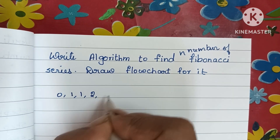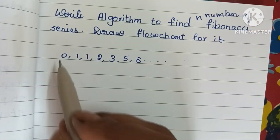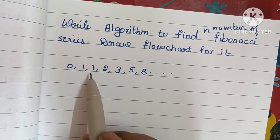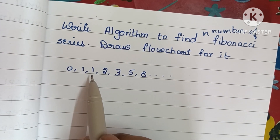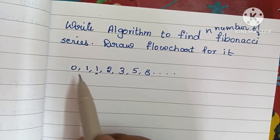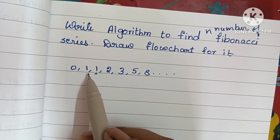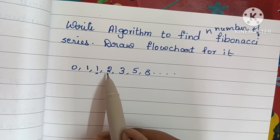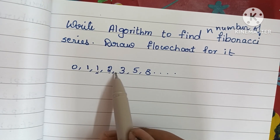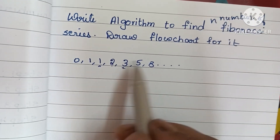Here zero and one are the first two numbers of the Fibonacci series. The next third number is found by adding the first two numbers: zero plus one is one. The next number is found by adding the previous two numbers: one plus one is two, then one plus two is three, and two plus three gives five.